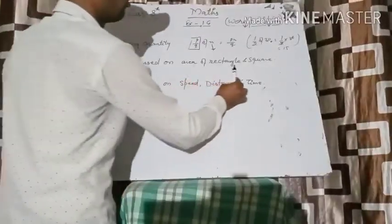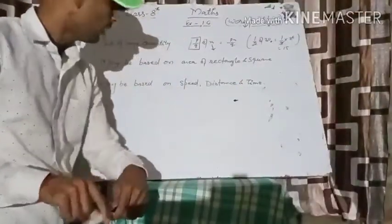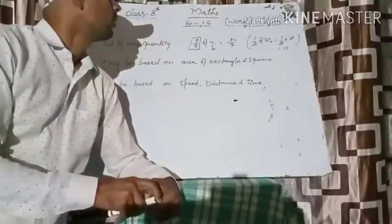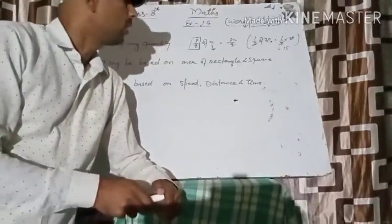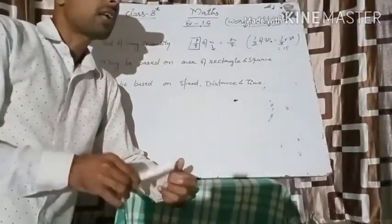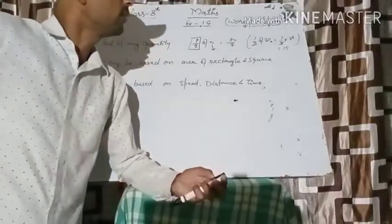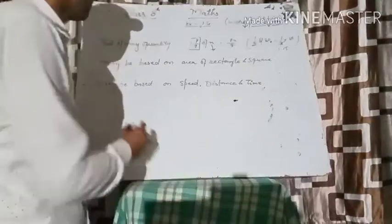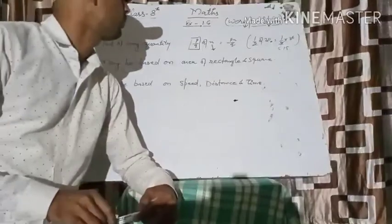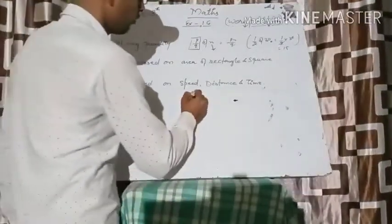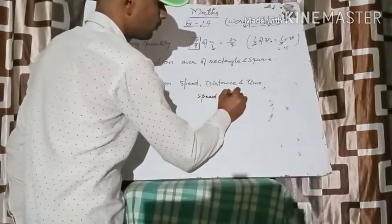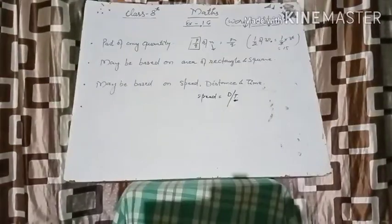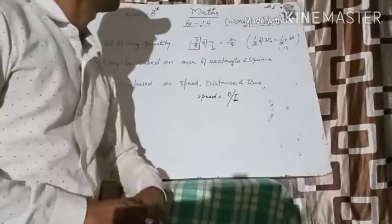The second type of question may be based on the area of a rectangle or square. Whenever the length or width of the rectangle is given, the question may ask about the area, or if the area is given, it may ask about the width. The next word problem may be based on speed, distance, and time. The relationship is: speed equals distance upon time, and by the help of this relation you can arrange your questions.